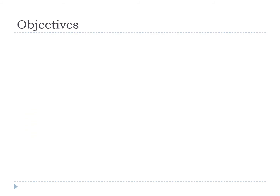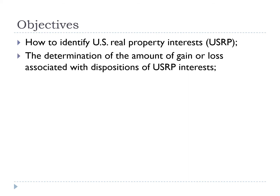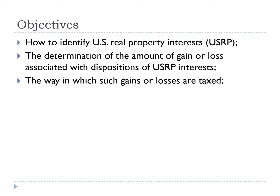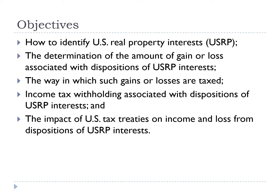The objectives of this lecture are to understand the following: how to identify U.S. real property interests; the determination of the amount of gain or loss associated with dispositions of U.S. real property interests; the way in which such gains or losses are taxed; income tax withholding associated with dispositions of U.S. real property interests; and the impact of U.S. tax treaties on income and loss from dispositions of U.S. real property interests.